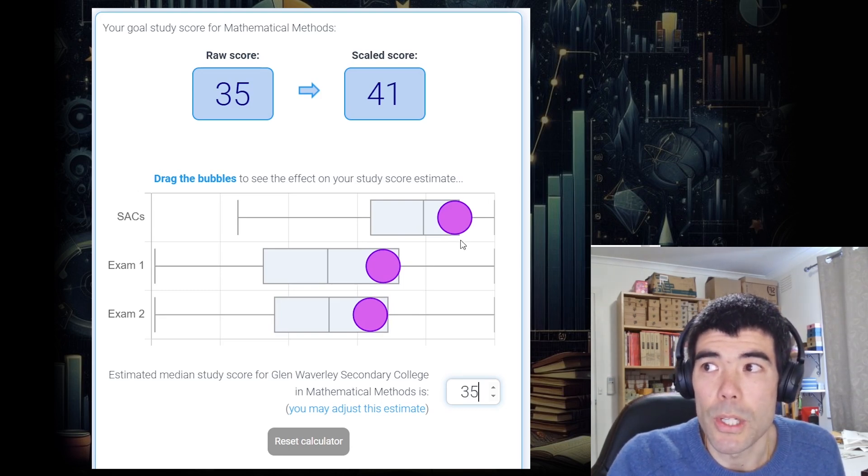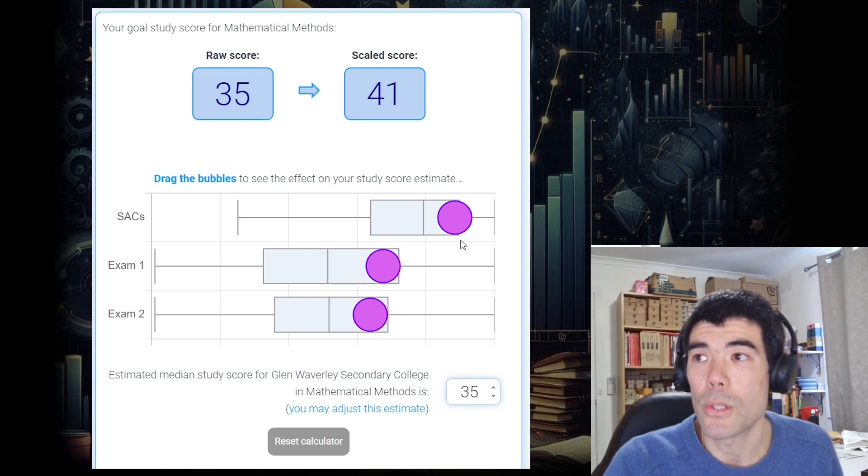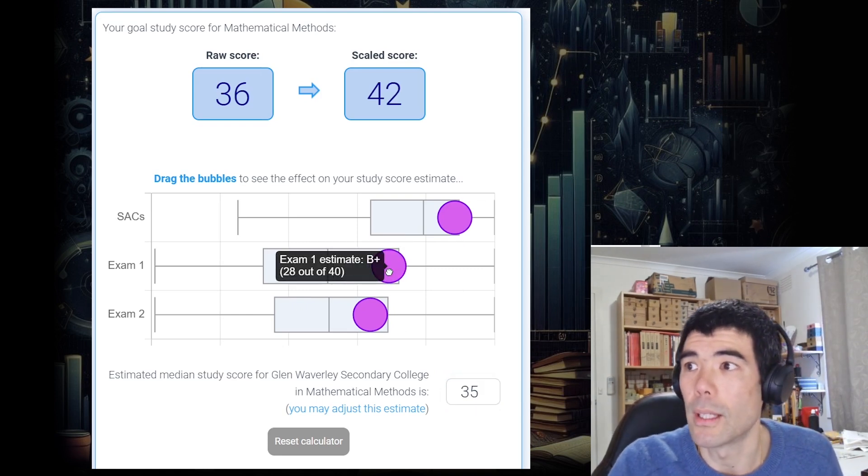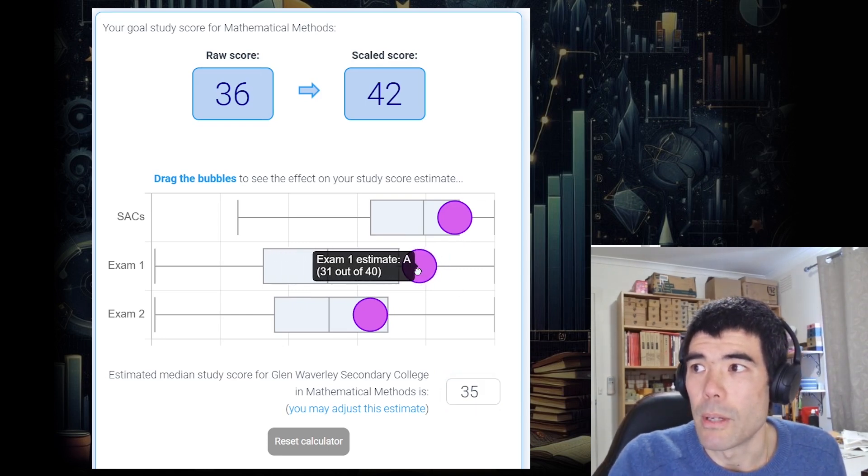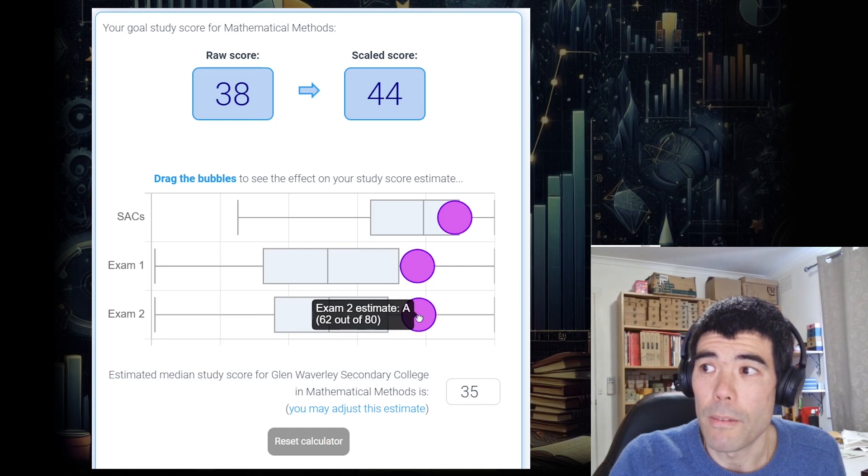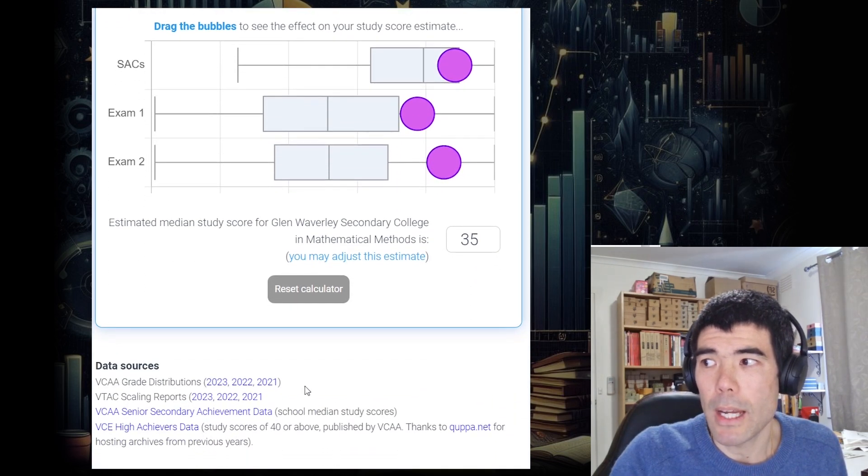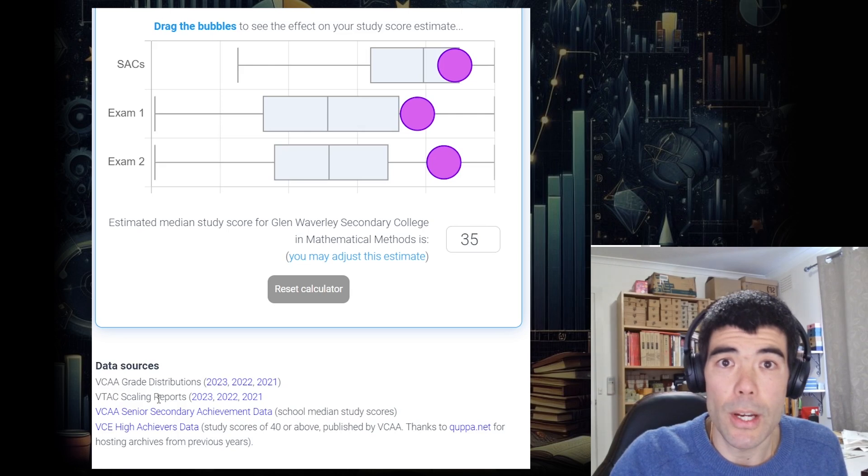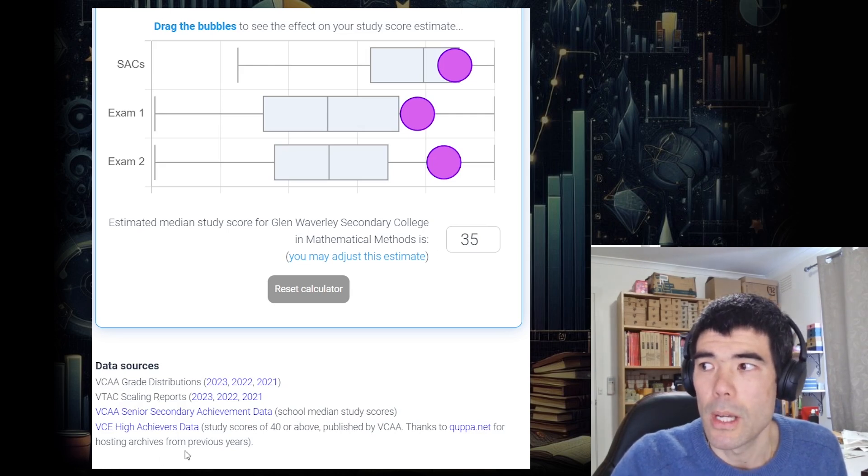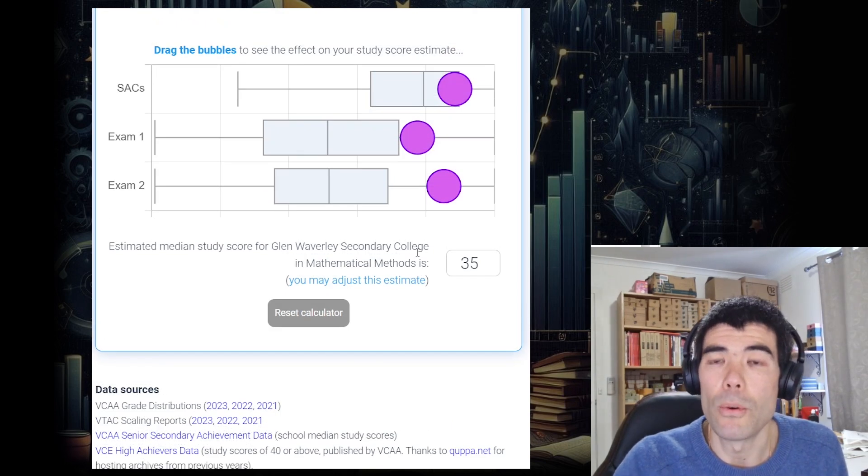And this score, which is in the top 25% of those students, would be adjusted up accordingly. We can adjust our exam scores and see what effect that would have on our study score. How I've done it basically, I've taken not only the VCAA grade distributions, the VTAC scaling reports, but also this data published by the VCAA on the median study score for every school and the number of students at each school who are getting above 40.